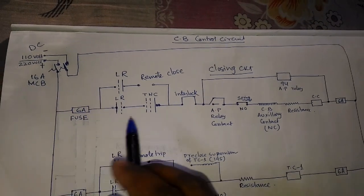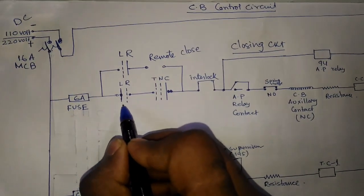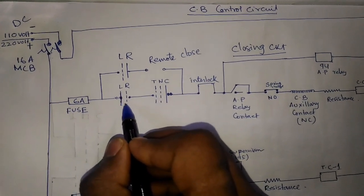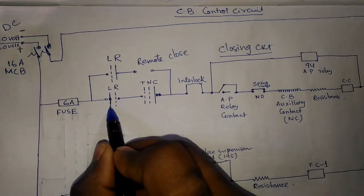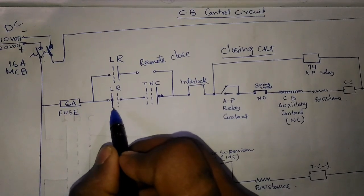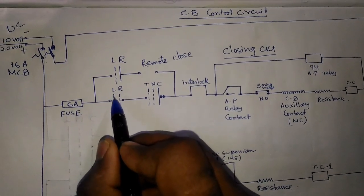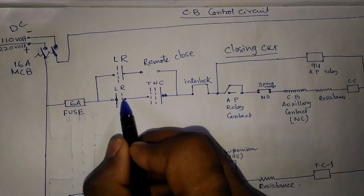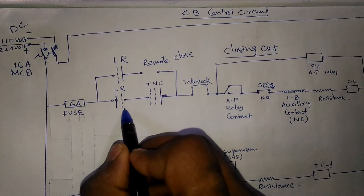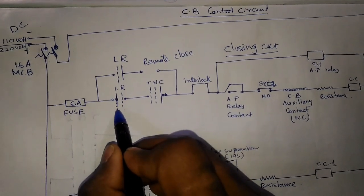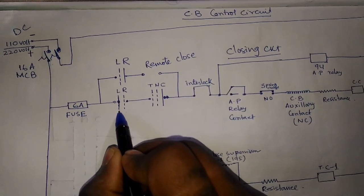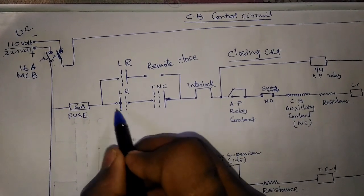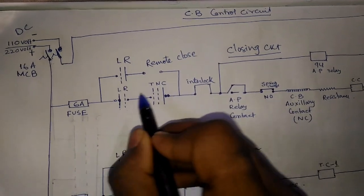For clear understanding, we are using a deep line and a dotted line. If you are operating the circuit breaker locally, this is shown as a deep line and we are not operating the remote, so that side is shown as a dotted line. This is just for separation of concepts. The LR switch and the TNC switch are shown here, and the LR switch is set to the local side.